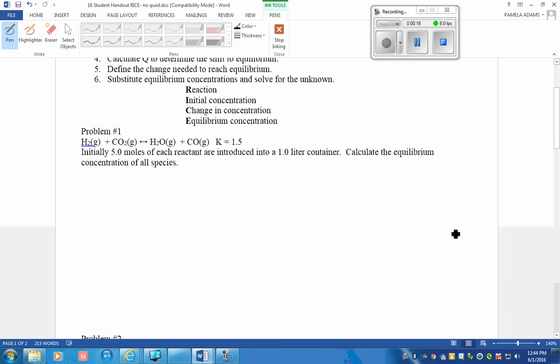Problem number one: we have H2 gas plus CO2 gas that's in equilibrium with water vapor and carbon monoxide gas. The K value for this is 1.5. So the first thing I'm going to do is write the balanced equation. As it says in the directions, it's already balanced, so we've got that done.